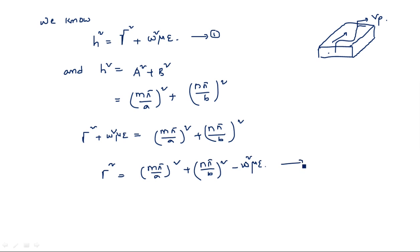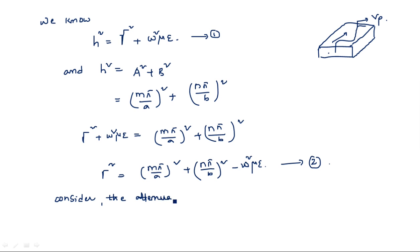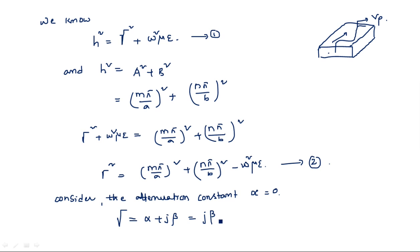Now take equation number 2. We know what α, β, and γ are in waveguide technology. Alpha is the attenuation constant, beta is the phase constant, and gamma is the propagation constant, where γ = α + jβ. Now consider the attenuation constant α = 0, so γ = jβ.